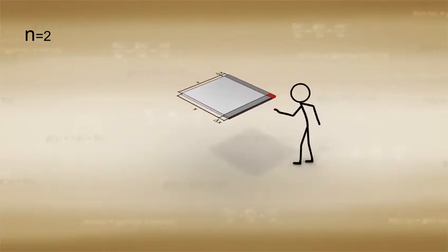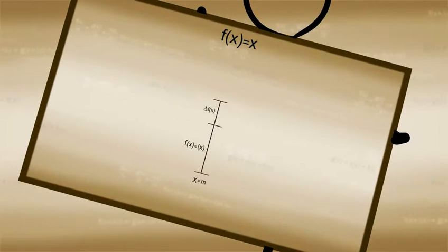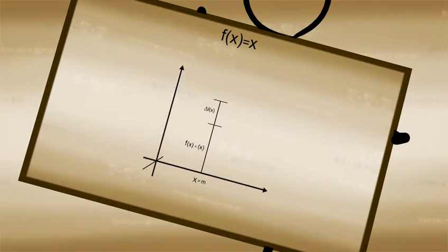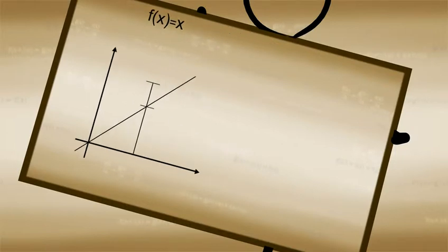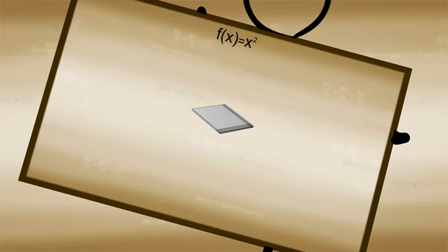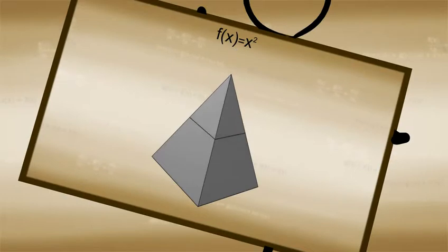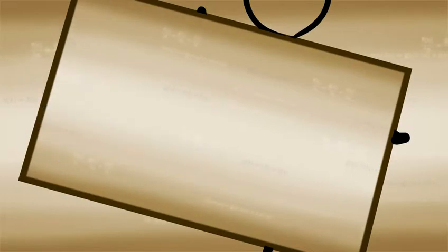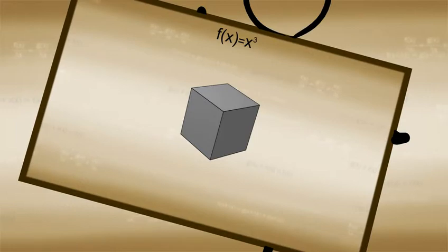Notice that for the case where f(x) is equal to x, the value of the function was represented by a one-dimensional line, and its progression through increasing values of x was represented by a two-dimensional graph. In the case where the function is f(x) equal to x squared, we represented the value of the function by a two-dimensional square, while its progression through increasing values of x was represented by a pyramid in three dimensions. This implies that the representation of f(x) equal to x cubed will likely be three-dimensional in nature, and its progression through increasing values of x could be represented in four dimensions. In order to represent the value of x cubed — hint hint — a cube will be depicted.